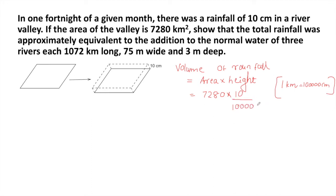One kilometer means one lakh centimeters, so we can divide with one lakh here and we'll get 0.728 cubic kilometers. This is the volume of rainfall.